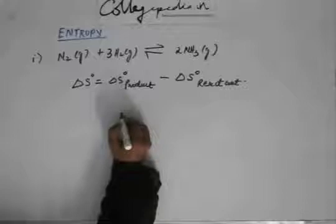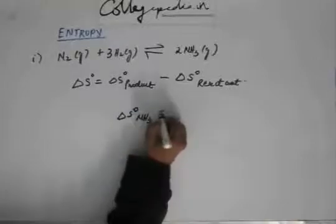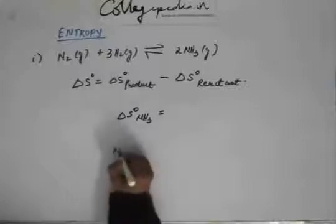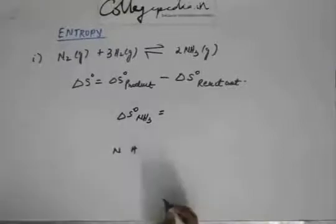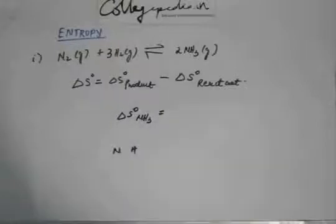So, I am giving you some values. For example, I am giving you delta S of ammonia. Delta S of ammonia means when nitrogen and hydrogen were in atomic state, what is the change in entropy when they have gone from atomic state to this molecular state of ammonia?